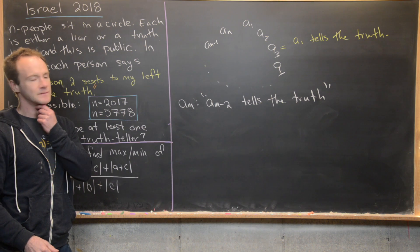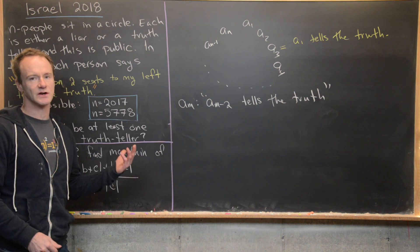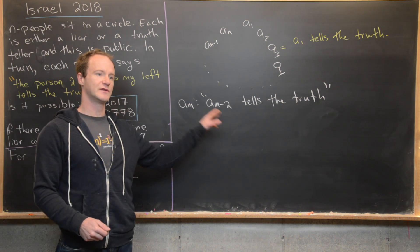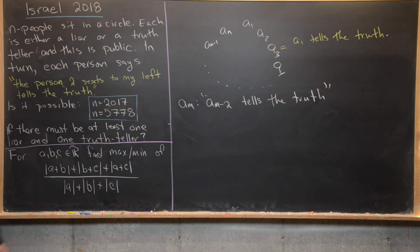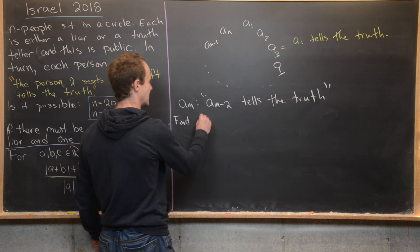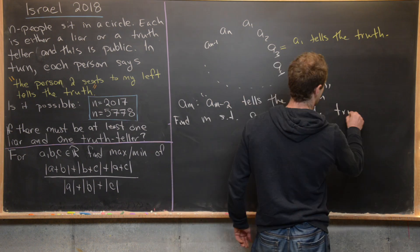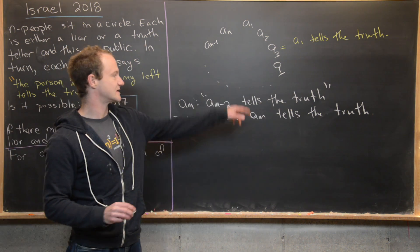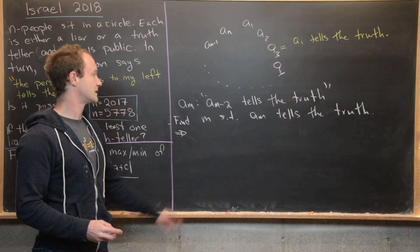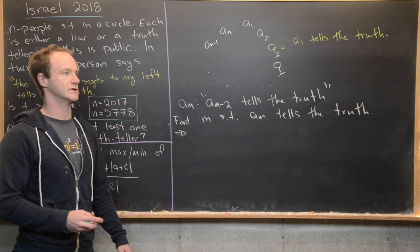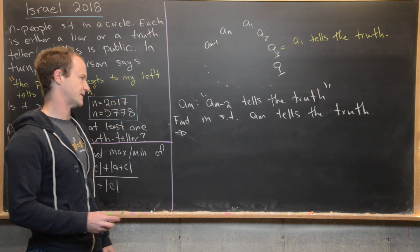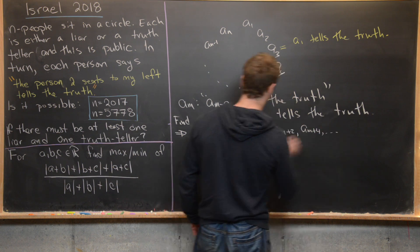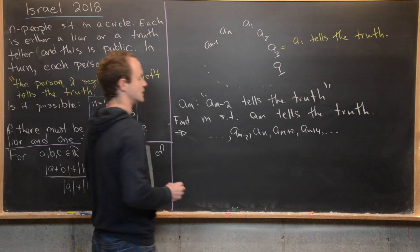This breaks down into two cases: A_M tells the truth, or A_M is a liar. Since there must be at least one truth teller, let's find M such that A_M tells the truth. That tells us A_{M-2} is also a truth teller, because A_M said so and A_M tells the truth. Furthermore, A_{M+2} is also a truth teller, and so are A_{M-4}, A_{M+4}, and so on. So A_M, A_{M+2}, A_{M+4}, continuing in both directions, are all truth tellers.